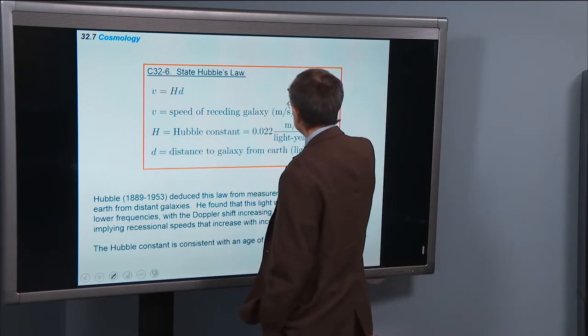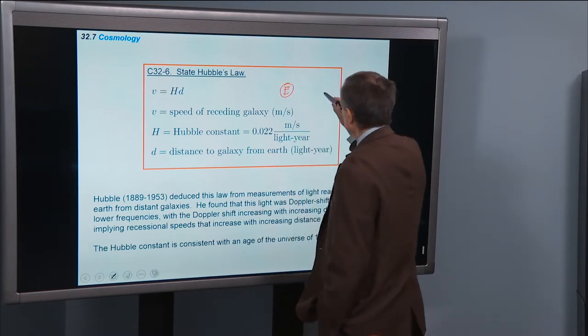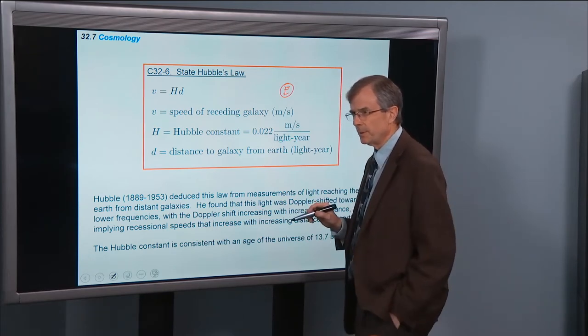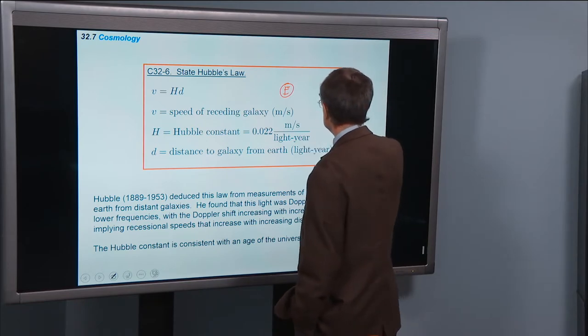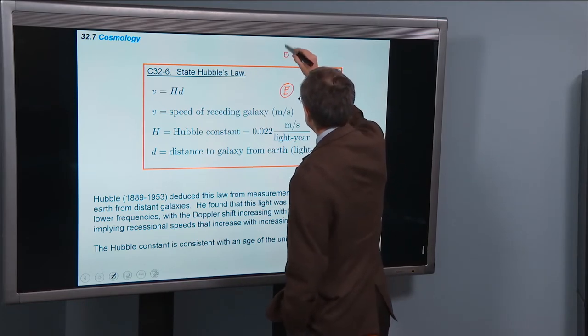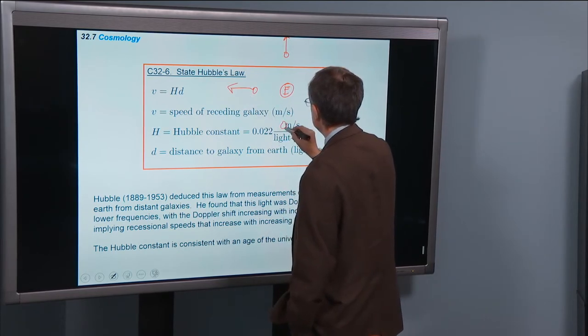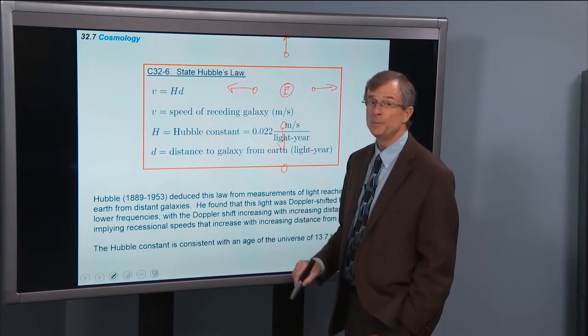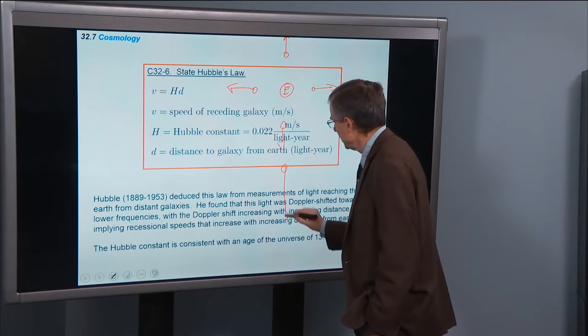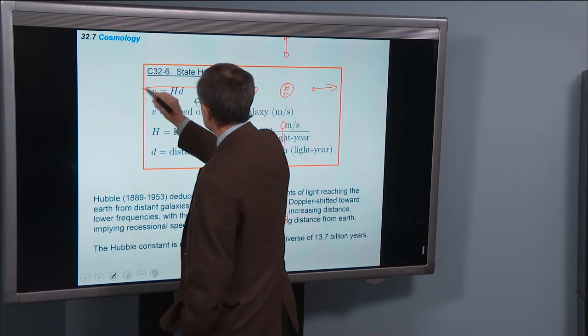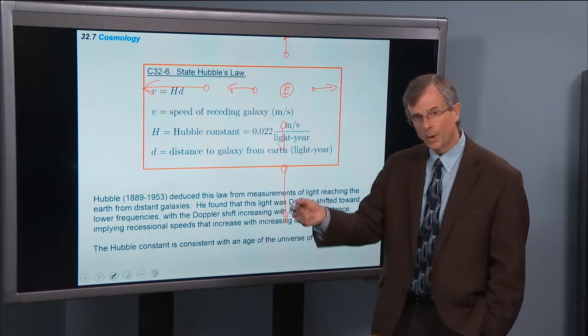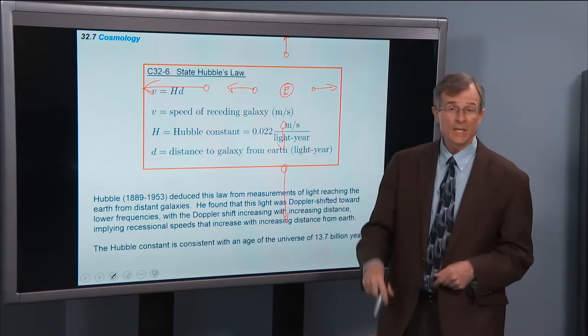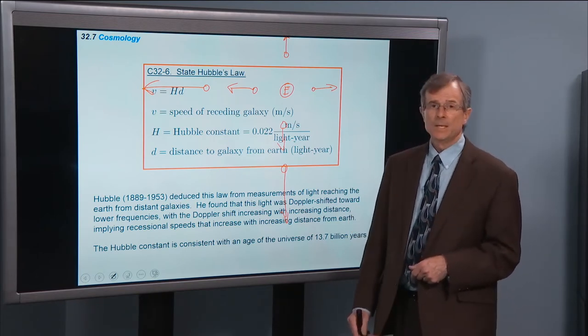So the idea is if this is us here on Earth, then we look out several billion, one billion light years, for example. Then you'll see at that distance, things are moving away from us at a certain speed. If we double the distance, we go out two billion light years. The galaxies at that double distance are going to be moving twice as fast as they were at one billion light years. So everything's moving away from us. And you say, well, that must mean that we're the center of the universe.